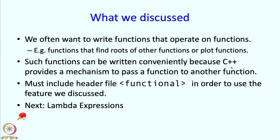In summary, we often want to write functions that operate on other functions — for example, functions that find roots or plot functions. Such higher-order functions can be written conveniently because C++ provides a mechanism to pass a function to another function, requiring the header file functional to define the type of the passed function. In the next segment I will talk about lambda expressions, which are a more convenient way of doing all this.